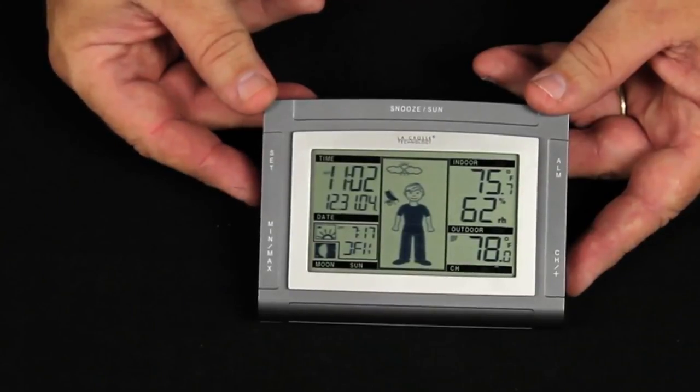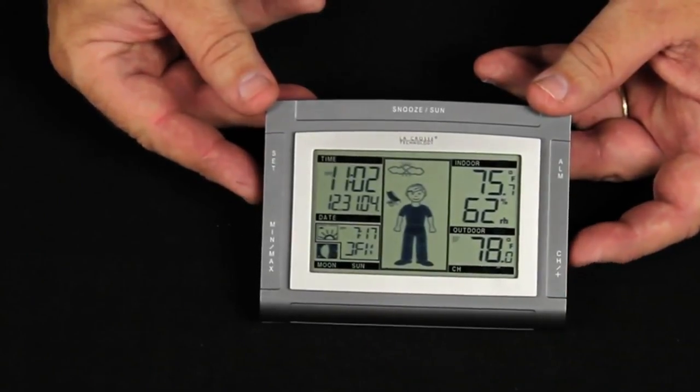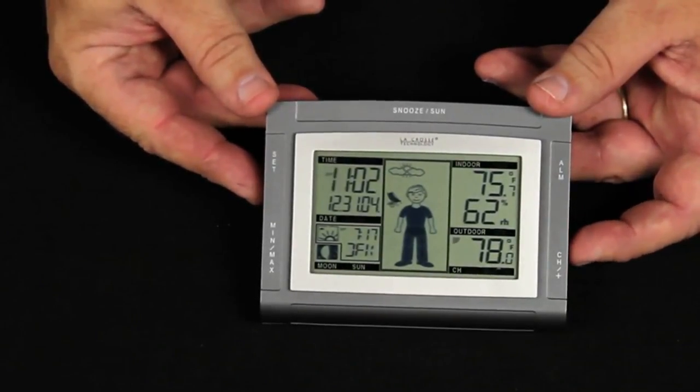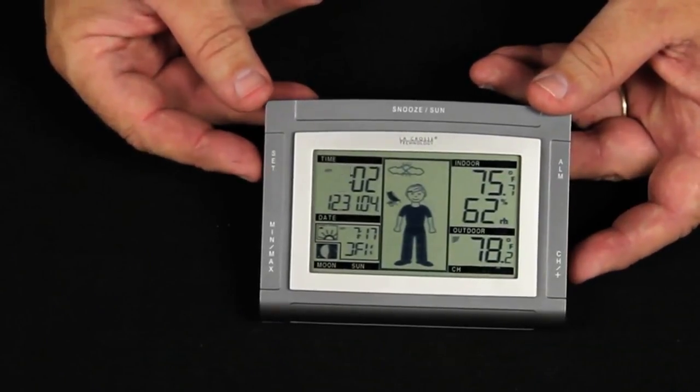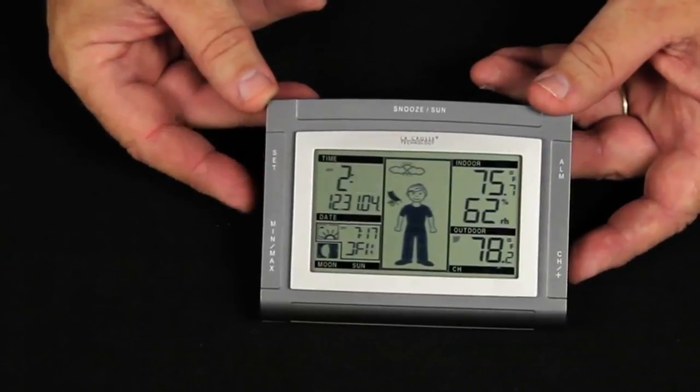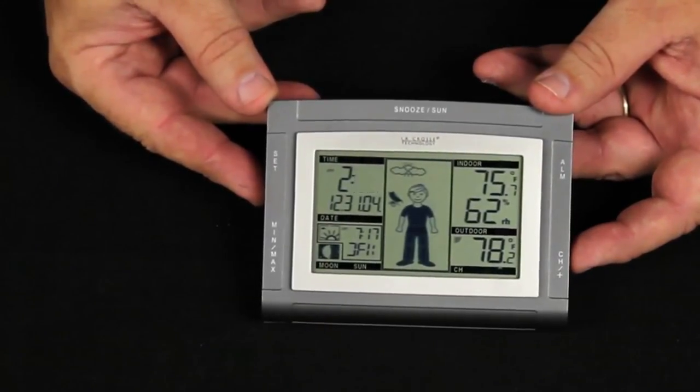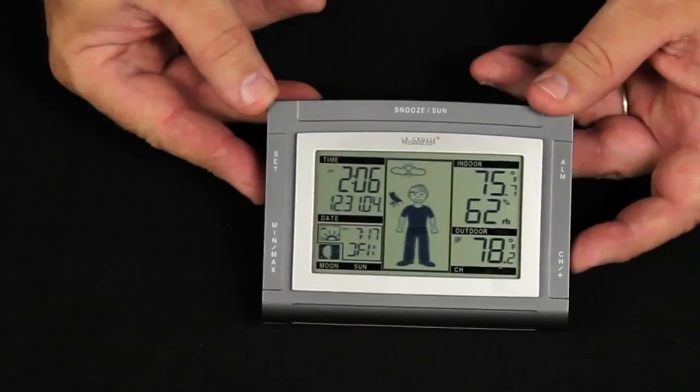Pressing the set button again allows me to set the time. This is set at 11 p.m. right now I want to make it about 2 in the morning using my plus button. Pressing the set button again allows me to set the minutes. It's at 2 minutes after we'll make it 215.